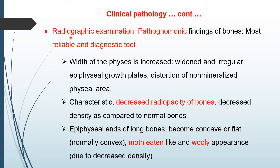X-ray or radiographic examination shows characteristic pathognomonic findings of the bone in rickets. This is the most reliable and diagnostic tool to assess the severity of the disease. Radiographic examination is very important to know the severity, degree, and progress of the disease, so we can know at which stage the disease is and how much deficiency is present. The radiographic changes observed are mentioned here.